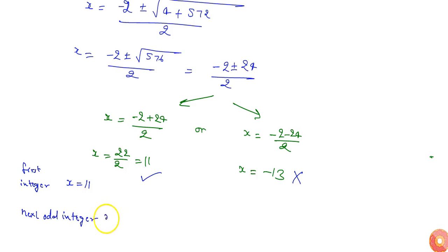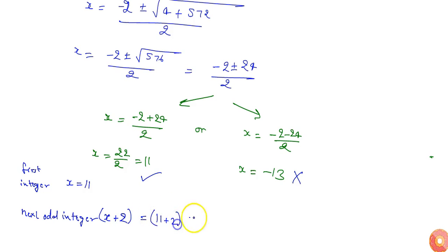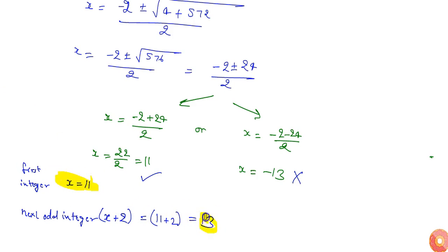If x equals 11, which is the first integer, then the next odd integer will be x plus 2, which is 11 plus 2, or 13. So the two consecutive odd positive integers are 11 and 13.